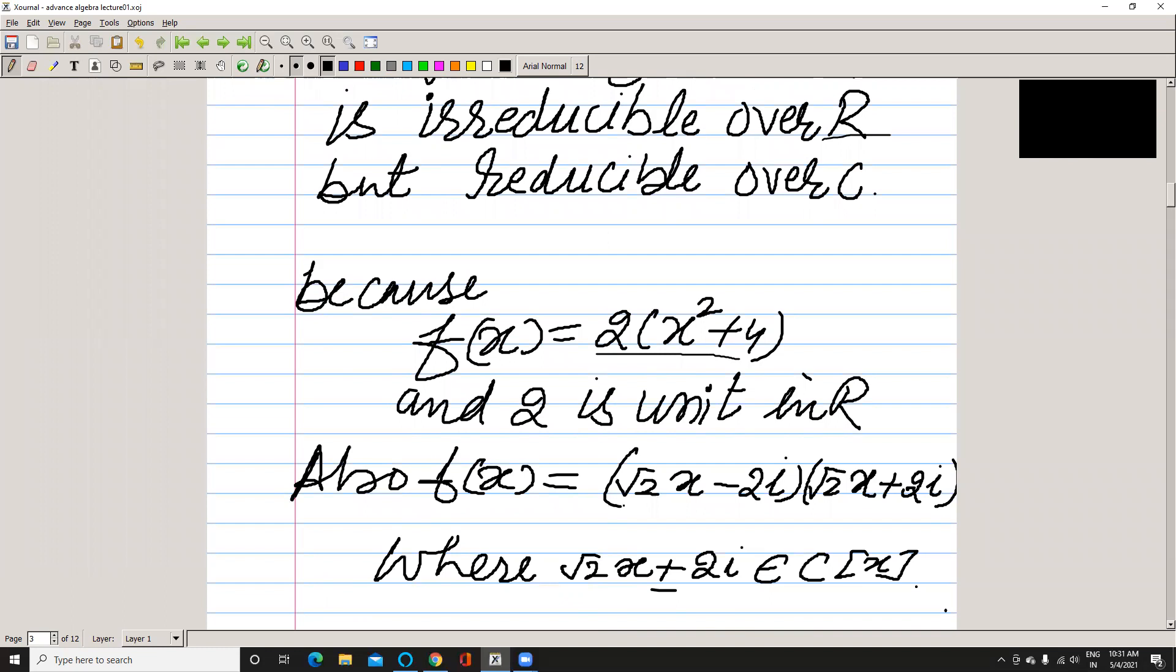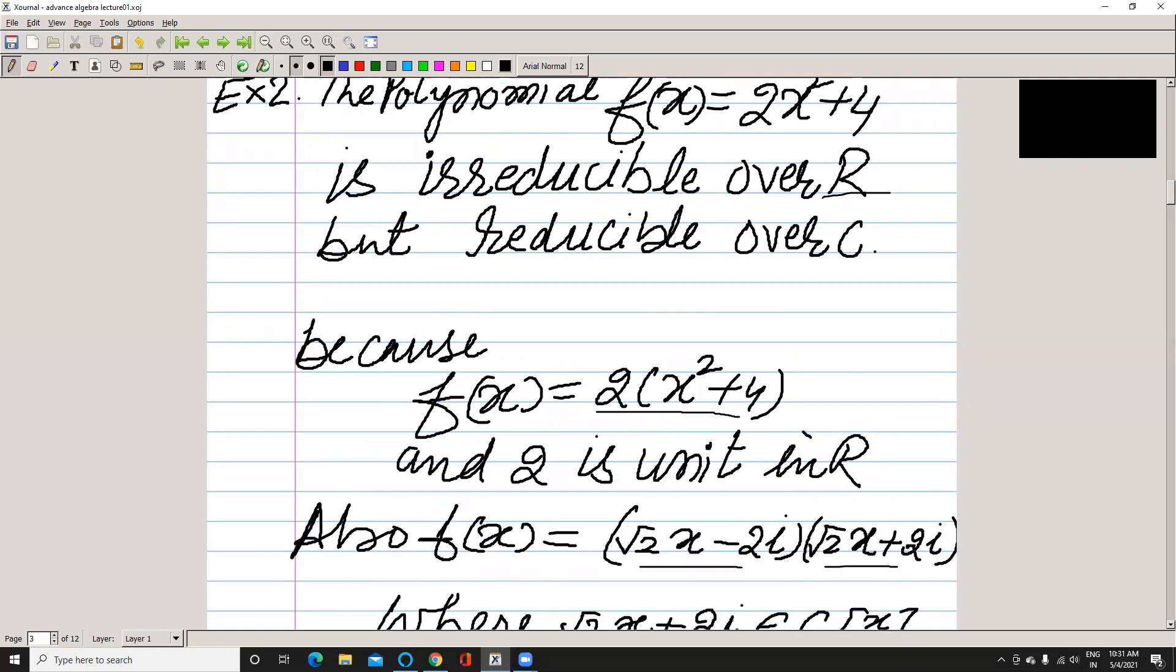And if f(x) can be written in this form, clearly this polynomial and this polynomial both belong to C[x], that is ring of polynomials over C. Here reducibility and irreducibility is depending upon the field of the coefficients.